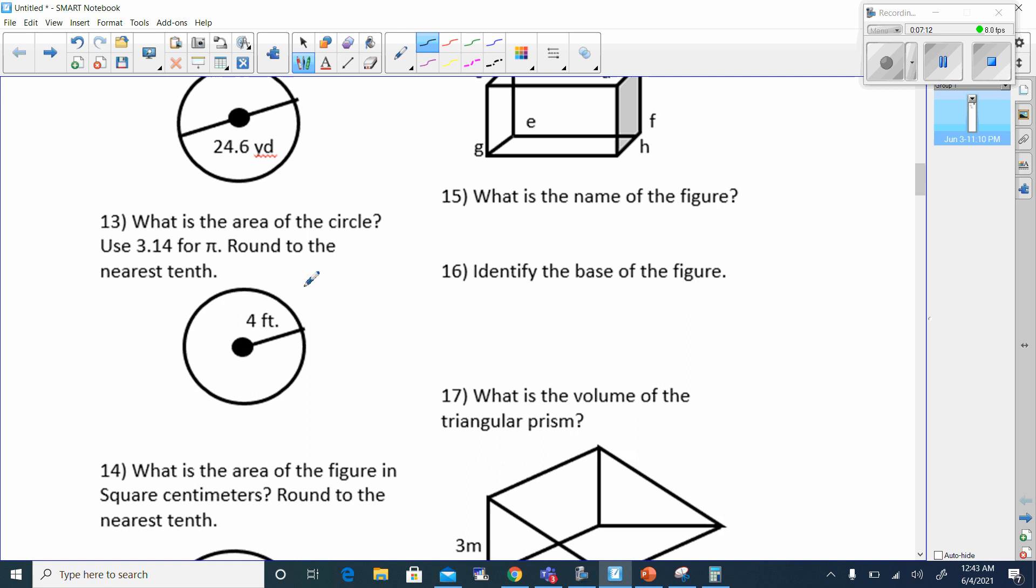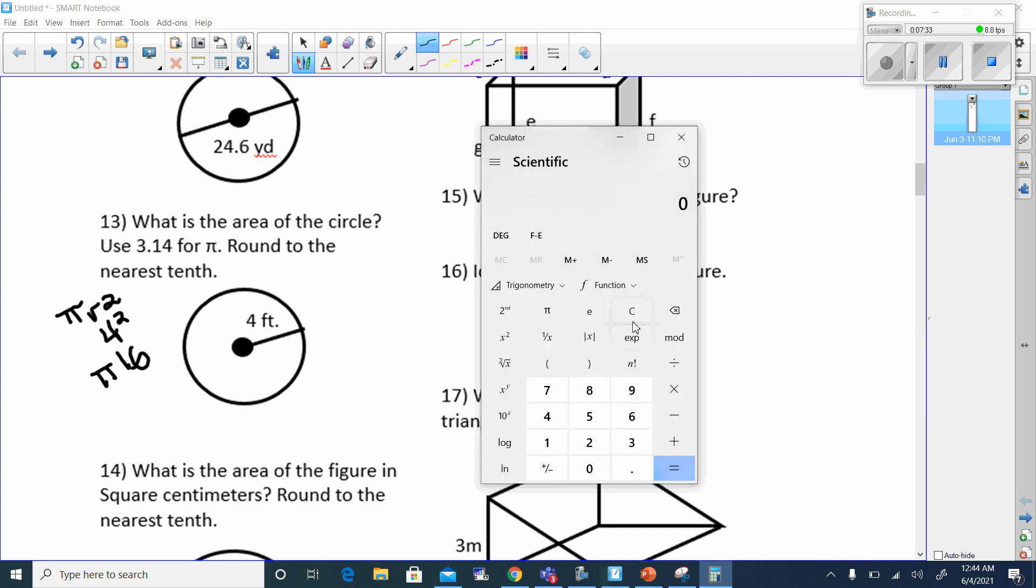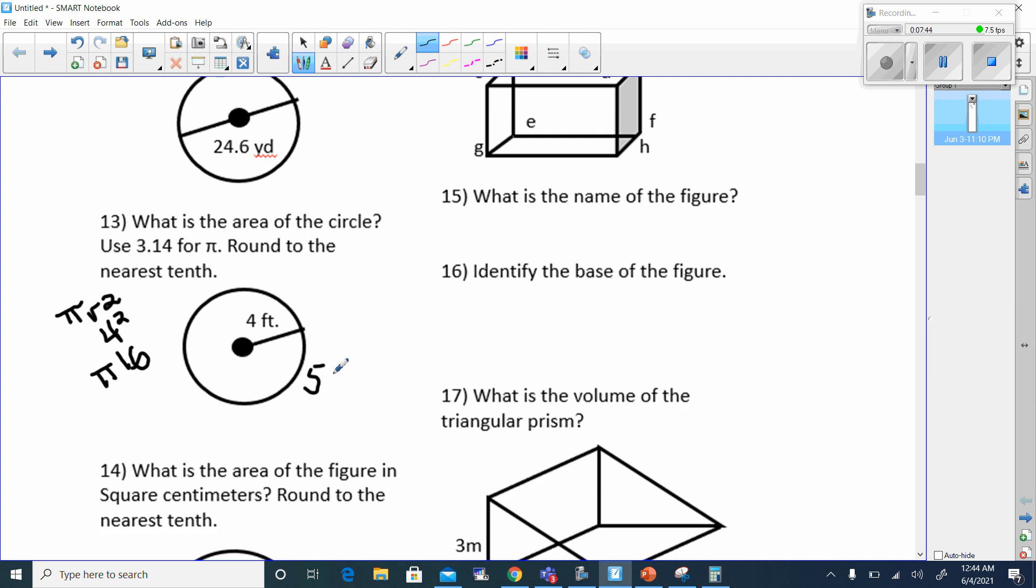Let's try number 13. What is the area? The area of the circle is pi r squared. The radius is 4, so that radius is going to be 4 times 4, which should be 16. Now I'm going to multiply 16 times 3.14. 16 times 3.14 is going to equal 50.24.